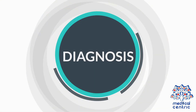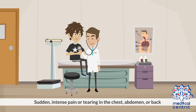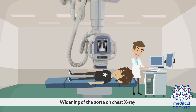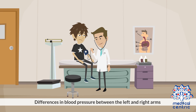To make a diagnosis, the doctor will review your medical history and carry out a physical examination. Doctors will suspect aortic dissection if the following symptoms are present: sudden intense pain or tearing in the chest, abdomen, or back; widening of the aorta on chest x-ray; and differences in blood pressure between the left and right arms.